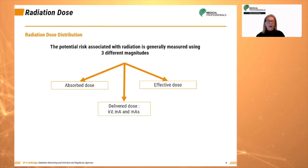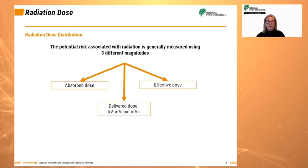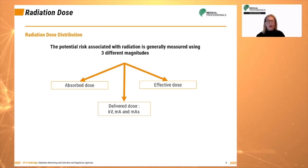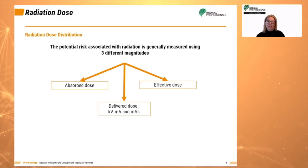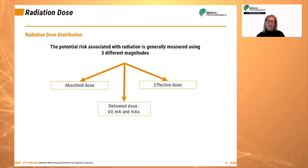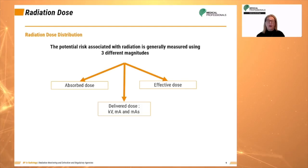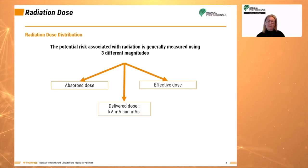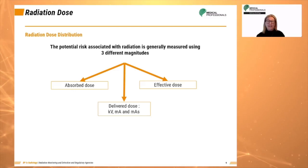The absorbed dose is defined as the amount of energy deposited by ionizing radiation in a substance, given the symbol D. It is usually measured in a unit called the gray, derived from SI units, or the rad in the conventional system. A millisievert is how scientists measure radiation in what we call the effective dose. The fundamental radiation dose measurement in computed tomography is the CT dose index, or CTDI, which is the dose within the primary beam.